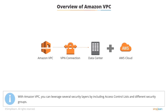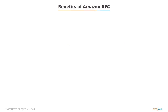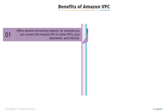With Amazon VPC you can also leverage several security layers, including access control lists or ACLs and different security groups. This enables you to control access of instances in each subnet. The significant benefits of Amazon VPC start with it offering several connectivity options.